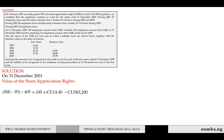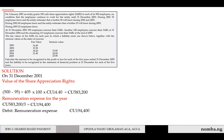Having determined that, the remuneration expense for 2001 is 583,200 divided by 3 years, giving 194,400. We debit remuneration expense with 194,400 and credit liability with 194,400.